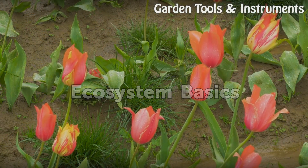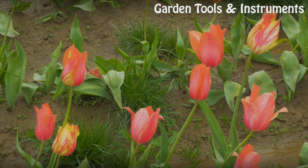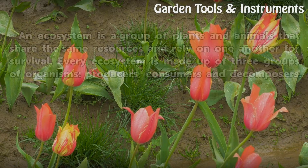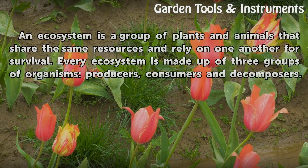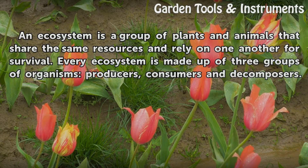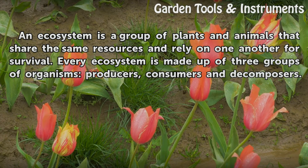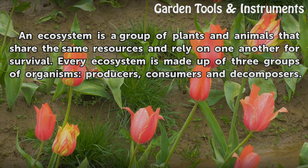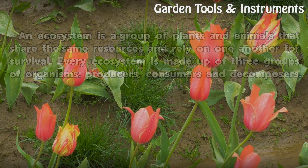Ecosystem Basics. An ecosystem is a group of plants and animals that share the same resources and rely on one another for survival. Every ecosystem is made up of three groups of organisms: producers, consumers, and decomposers.